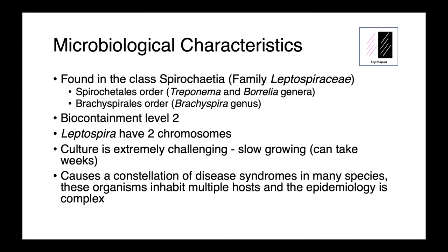The genus Leptospira is found within the family Leptospiraceae, and it's related to the Spirochetales, which includes Treponema and Borrelia, as well as the Brachyspirelles at the class level. So it's a distant cousin of the organisms we talked about in our last lecture. Leptospira are biosafety containment level two, and they're unique in that these organisms have two chromosomes. Culturing Leptospira is certainly possible but extremely challenging — it can take weeks to grow and requires specialized skills.